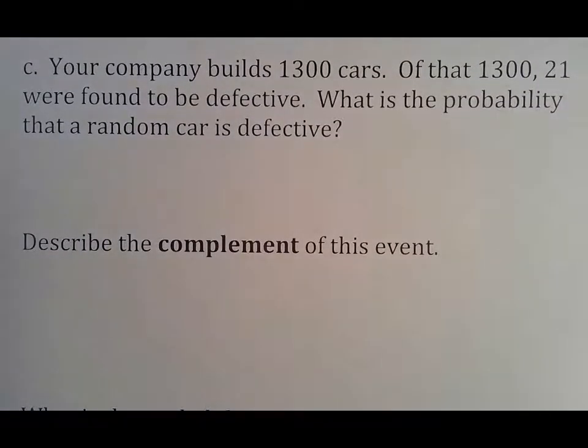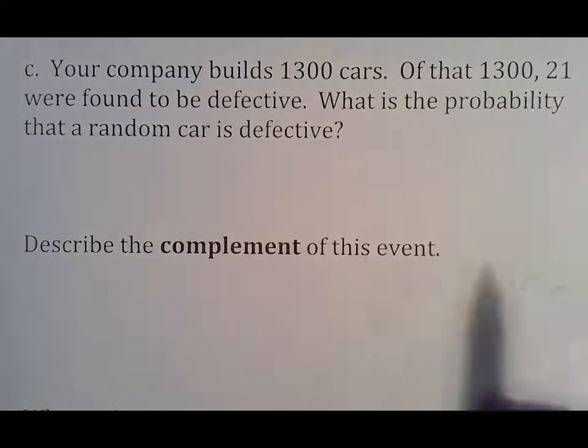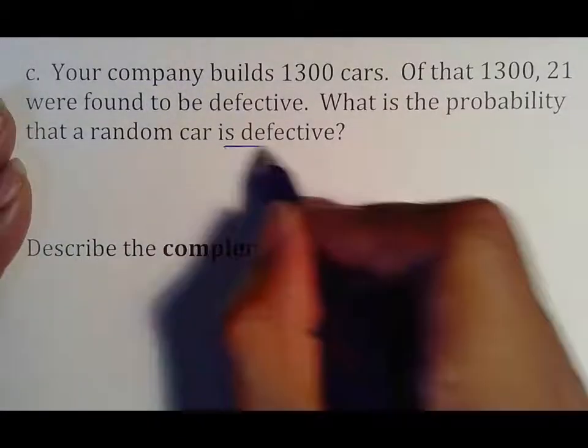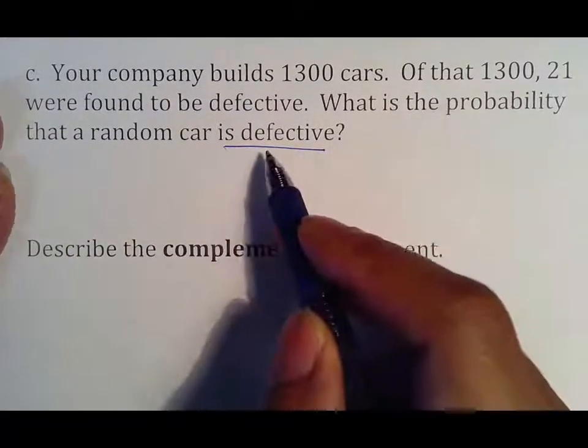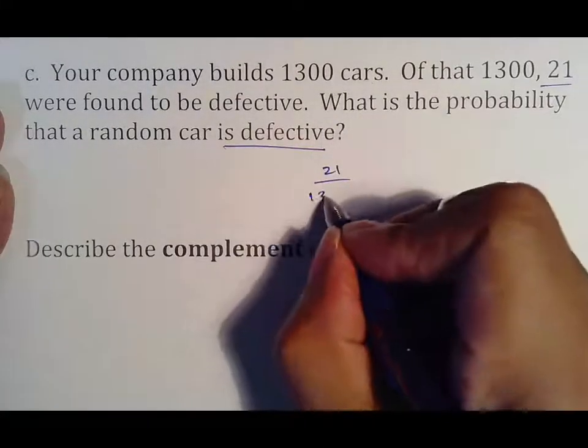There's a lot of questions on this you're going to have to ask about, but again, you have to actually do the work because there's no way for me to teach you how to do this with every single question that's out there. Your company builds 1300 cars. Of that 1300, 21 were found to be defective. What is the probability a random car is defective? So we want defective. We built 1300 cars, 21 were defective.